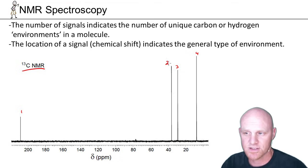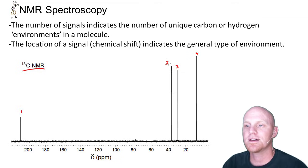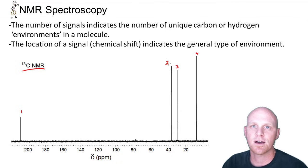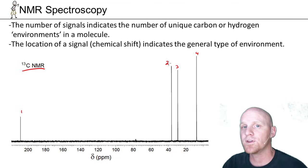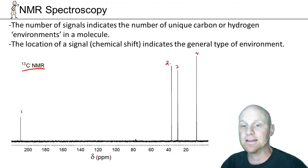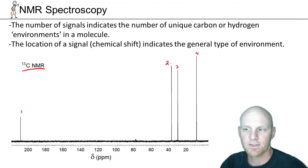So in this case there are four carbon environments. That doesn't mean necessarily that there are only four carbons in the molecule. Sometimes carbons can be in the same chemical environment — we say they're chemically equivalent.